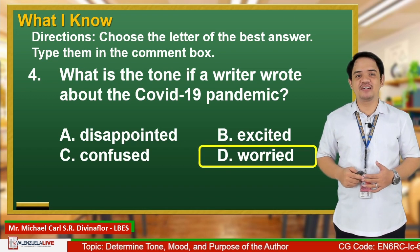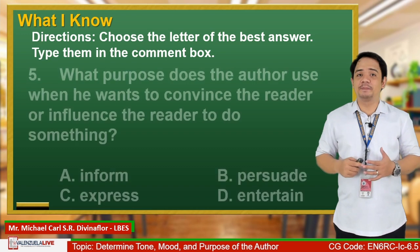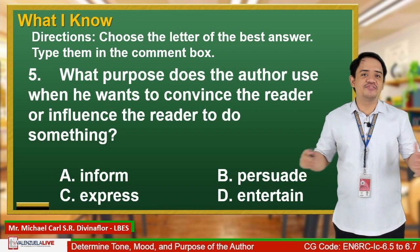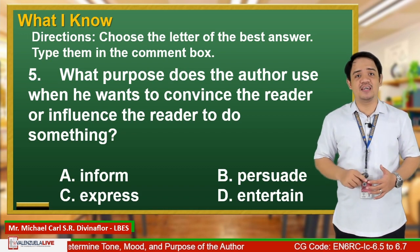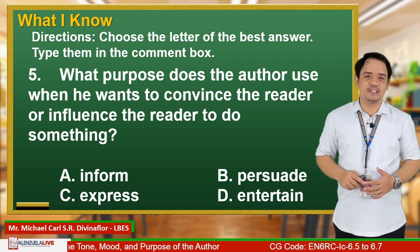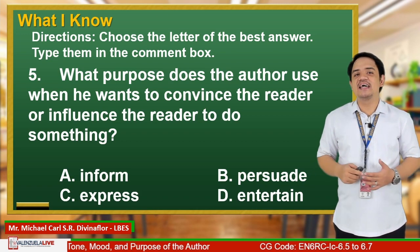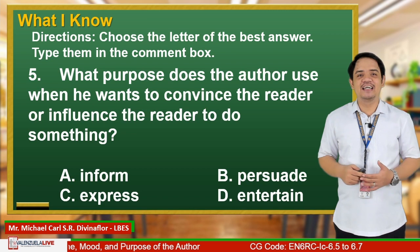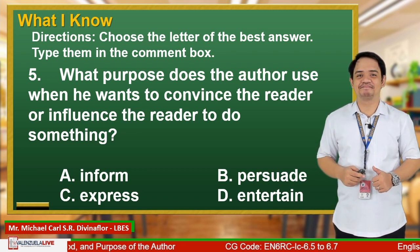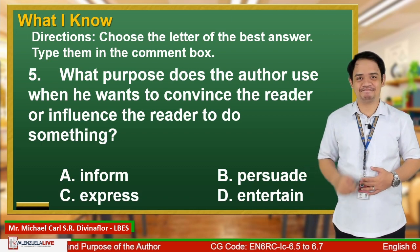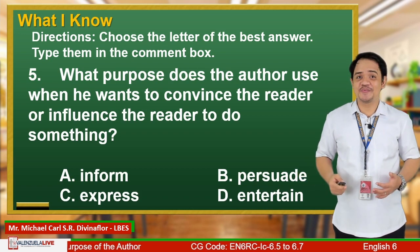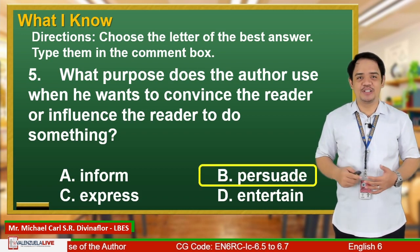And for our last number: What purpose does the author use when he wants to convince the reader or influence the reader to do something? Is it A. Inform? B. Persuade? C. Express? D. Entertain? The correct answer is letter B — it is to persuade.